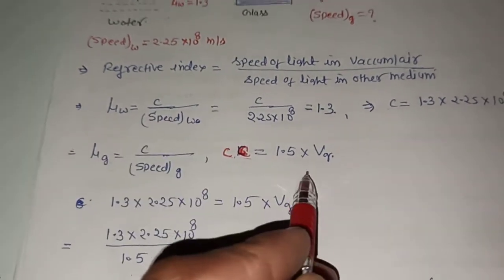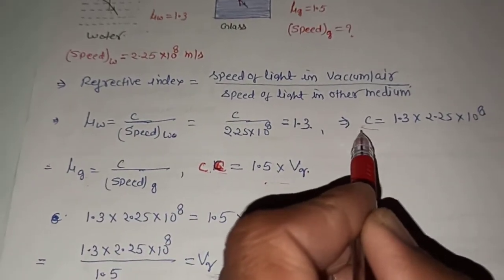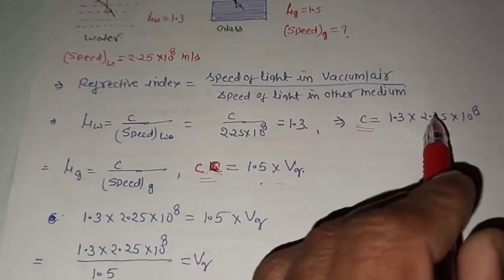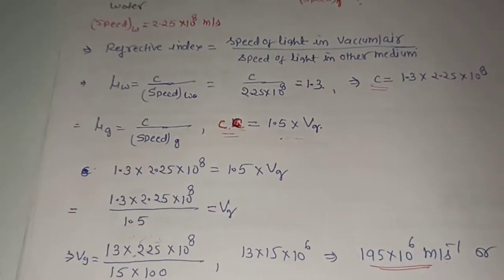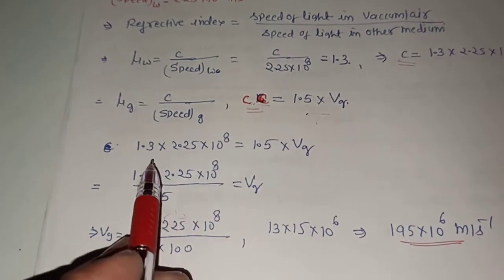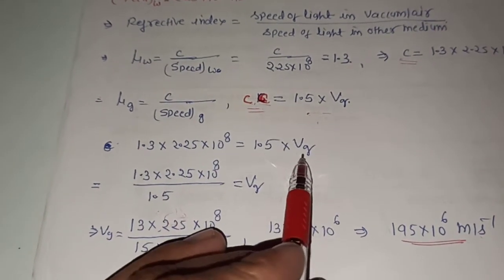Now, C from the first expression and C from the second expression are equal. We compare both expressions and equate them, which gives us a combined expression to solve for the speed of light in glass.